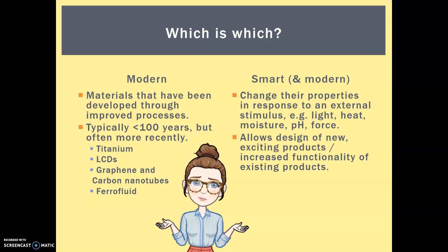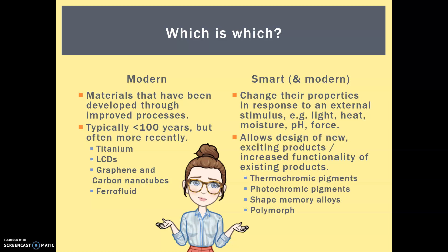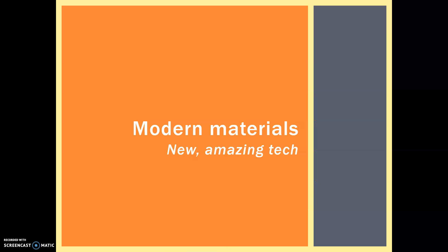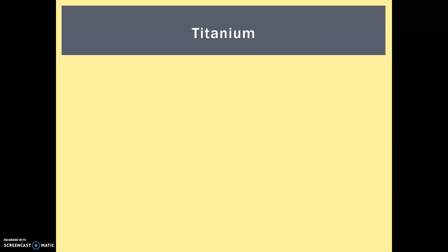Smart materials allow for the design of new, exciting products and increase the functionality of existing products. The smart materials we're going to look at are thermochromic pigments, photochromic pigments, shape memory alloys, and polymorph. So let's get into it — we're going to look at modern materials first. Our first one is titanium.